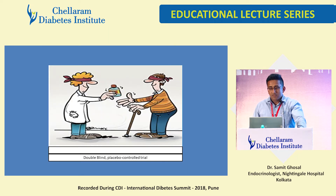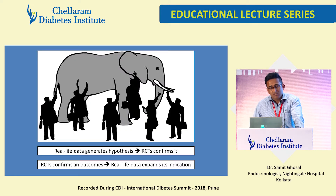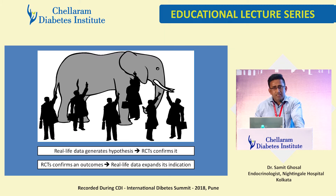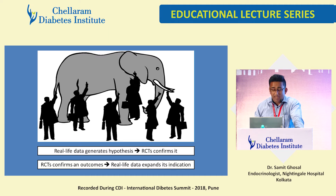The gold standard is the double-blind placebo-controlled trial, where neither the physician nor the patient knows what's happening — so it is devoid of bias. But with eyes closed, like the blind man touching an elephant's trunk who thinks it might be a tapir or a marsupial rat — unless you open the blindfold and see the whole elephant, you'll never know the full picture. That's what RCTs and real-life data are about: RCTs close your eyes and touch the trunk; real-life data opens the blindfold to see the whole picture.